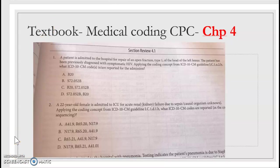So, textbook medical coding CPC chapter 4. Do you see how your section review 4.1 is right here? This is where you have to be. This is your question number one. You have three questions from section review to review first and figure out the answers before you do your quiz or homework. I want you to pay attention.